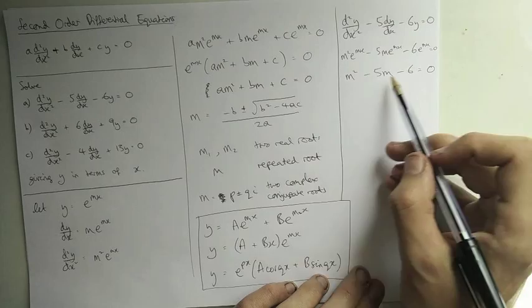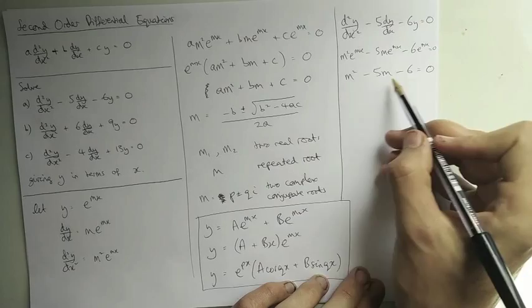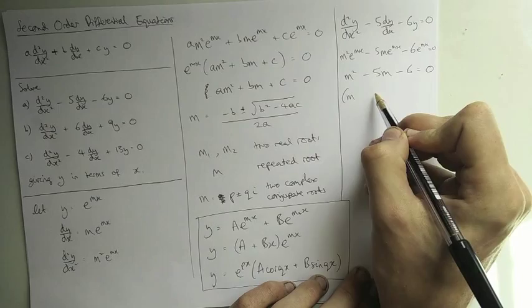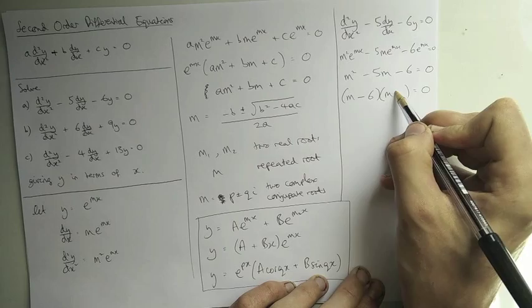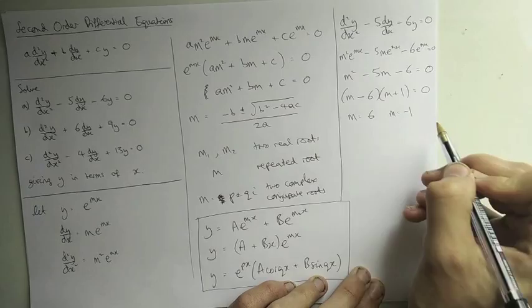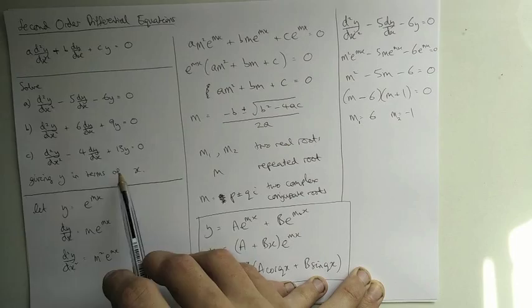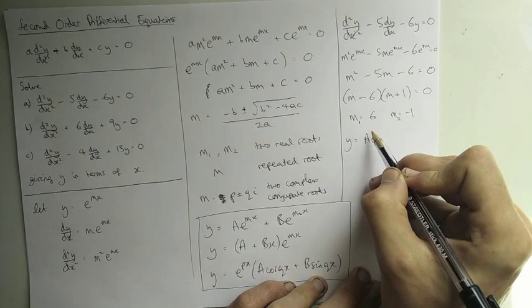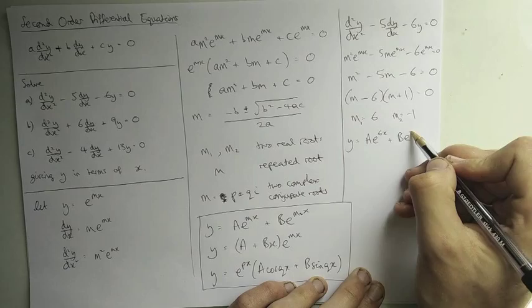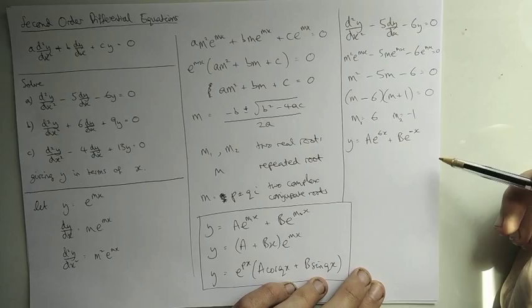Now we think: can we factorize this? We need two numbers that multiply to give −6 and add to give −5. That's −6 and +1, so the roots are m = 6 and m = −1. We have two real roots, so we use the first solution form: y = Ae^(6x) + Be^(−x). That's the solution to this equation — really all it is, is solving a quadratic and writing it in the right form.